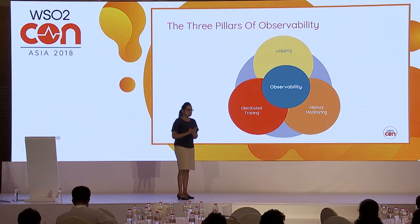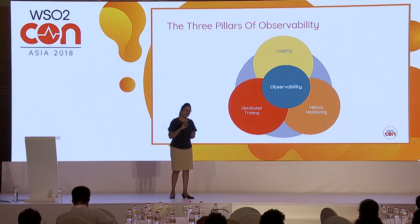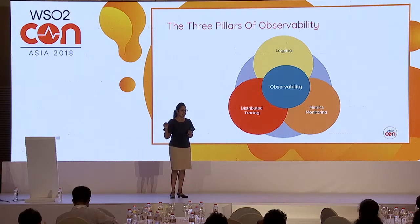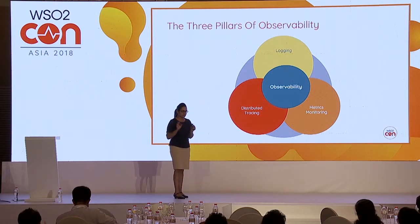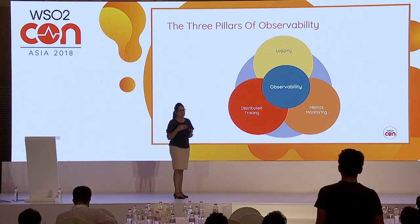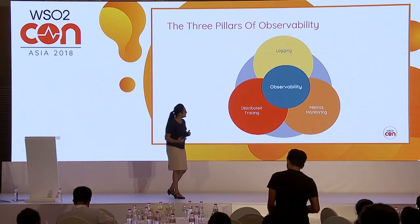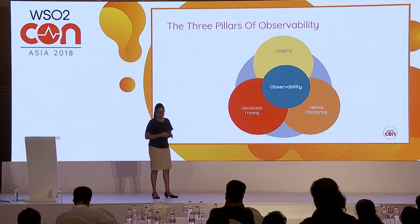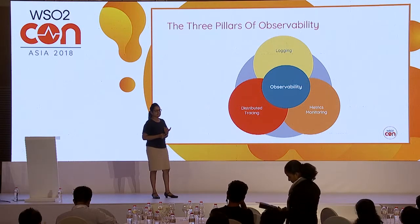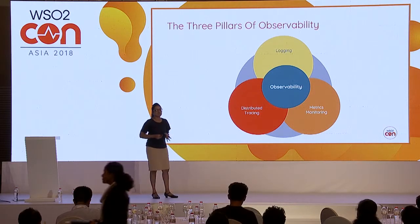Distributed tracing is correlated events. When a request comes in, there could be many events emitted for that particular request. You need to correlate all the events for a particular request so you can understand what happened — why it was delayed, and so forth. These are the three different factors that help provide observability for a system.